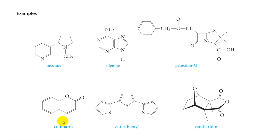Coumarin, found in clover and grasses, produces the pleasant odor of new-mown hay. Alpha-terthienyl, a compound with three linked sulfur-containing rings, is present in certain marigold species. Cantharidin, an oxygen heterocyclic, is the active principle in cantaris, also known as Spanish fly, a material isolated from certain dried beetles of the species Cantharis vesicatoria.